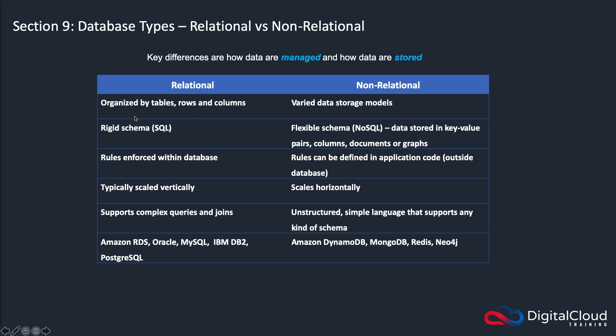In a relational database, data is organized by tables, rows, and columns, and it has a very rigid schema. That means the definition of how data is stored in the database is very rigid — it's defined and then it has to be adhered to. Those rules are enforced in the database. You scale these databases vertically, which in simple terms means that if you have a database server and you need to scale it, you need to add more CPU, more storage, more memory, etc.